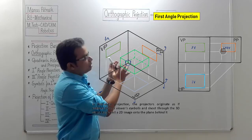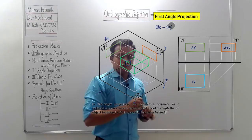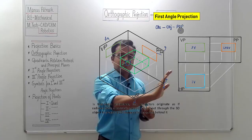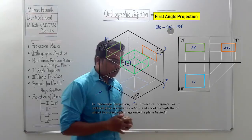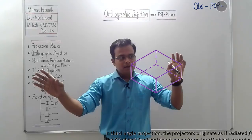This is how the layout of first angle projection looks. One final thing to remember: the sequence of events in first angle projection is observer → object → plane of projection. Now let us talk about third angle projection, where the sequence is: observer → plane of projection → object.